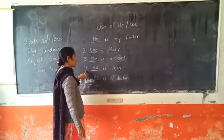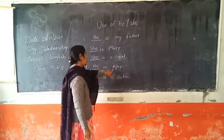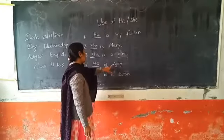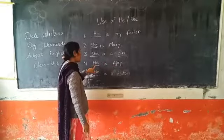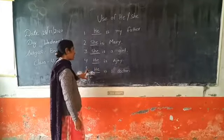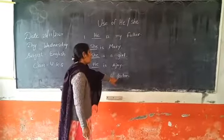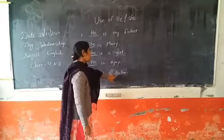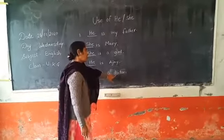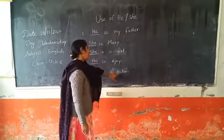In the fourth sentence, dash is Aje. Aje is male, so we use 'he' for Aje. And in the fifth sentence, dash is a doctor. We use doctor for both male and female.